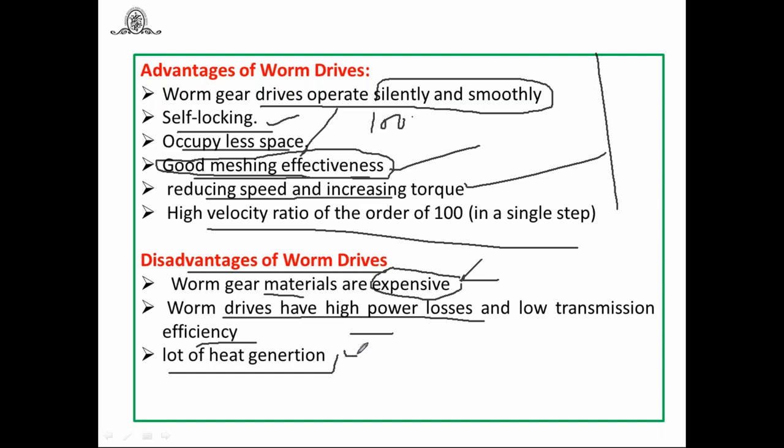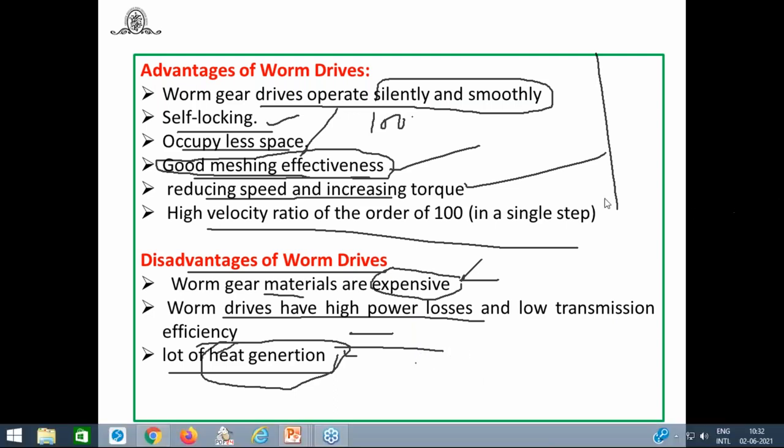Worm and worm gear produce a lot of heat, so unlike spur, helical, or bevel gearboxes — which use splash lubrication — worm and worm wheel are dipped in oil. Because of this heat generation, thermal consideration plays an important role while designing worm and worm gear, making their design somewhat different from other gear types.